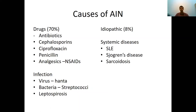The main causes of acute interstitial nephritis are divided into drug causes, infective causes, and systemic causes. Drug-induced acute interstitial nephritis is the main group. Antibiotics like cephalosporins, ciprofloxacin, and penicillin are common causes, as are analgesics, especially NSAIDs. Common infections include Hantavirus and Leptospirosis. Around eight percent of cases are idiopathic with no identifiable cause. Systemic conditions like lupus, Sjögren's, and sarcoidosis are also recognized causes.